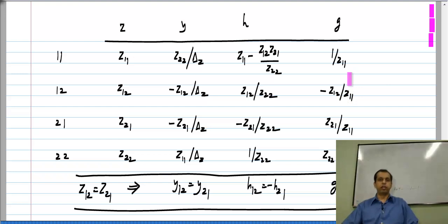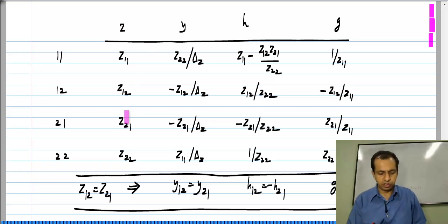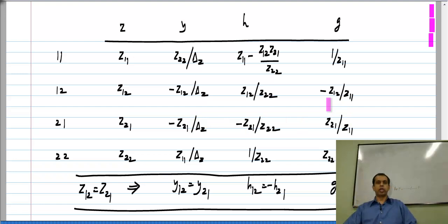A network where the reverse transmission parameter is 0 is known as a unilateral network. Similarly, if the forward parameter is 0 in Z parameters — that is, if Z21 is 0 — then Y21, H21, and G21 will also be 0. So being unilateral or being reciprocal are properties of the network and hold good regardless of which parameter set you choose to describe the network.